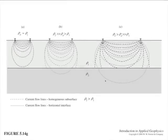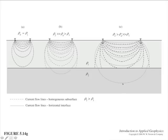Back to this concept here. Look at the current flow lines that are dashed for the homogeneous subsurface. Look at the current flow lines for the horizontal interface, where down below is higher resistivity. You can see that the current lines are shallower in the lower resistivity material and deeper in the higher resistivity material.